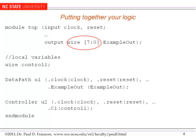Again, remember that all outputs of instance modules are of type wire. So example out is coming out of module data path, instance U1, and that has to be declared as type wire. Similarly, control 1 is an output of module controller, instance U2. It also has to be declared as type wire.